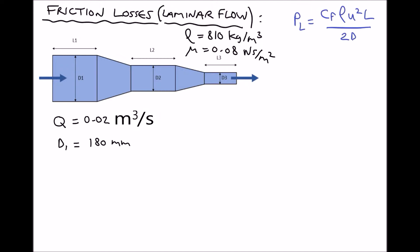For simplicity we're going to assume that L1 is 1.5 meters and we're also going to assume that L2 is 1.5 meters. The first thing we notice from the Darcy equation is we don't know the friction factor. We're given the density but we don't know the fluid velocity. So the first thing we're going to do is take our volume flow rate in the bottom left hand corner and the diameter of section 1 of the pipe, and calculate velocity 1 — the velocity in the first section of pipe.